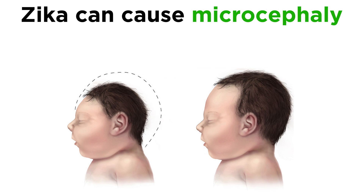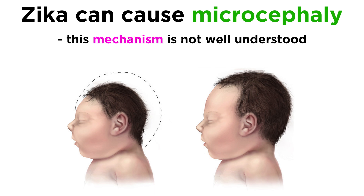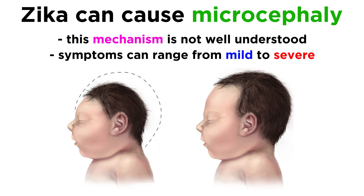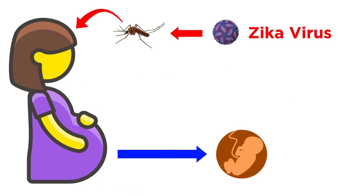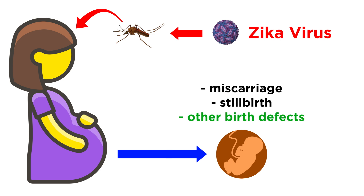More specifically, Zika can cause fetal or newborn microcephaly, which is a condition where a baby's head is much smaller than it should be, either because the baby's head did not develop properly or it stopped growing after birth. We don't fully understand every aspect of how this works, and newborns with microcephaly can have a wide range of symptoms, from mild to severe. Zika infection during pregnancy can also cause miscarriage, stillbirth, or yet other birth defects.